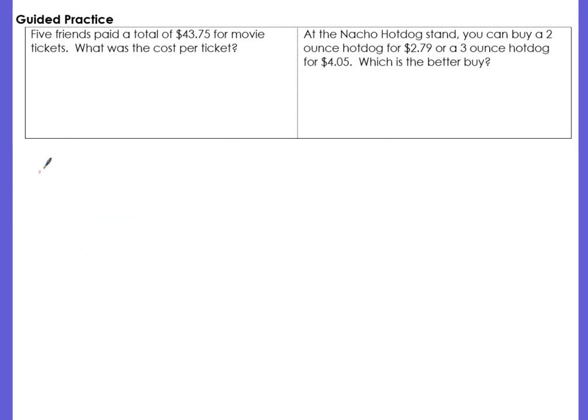Let's do a couple more examples. Five friends paid a total of $43.75 for movie tickets. What was the cost per ticket? So we want to find the unit price. Set up your rate. The cost was $43.75 for five friends that each got a ticket. So five tickets. We want to know how much did it cost for one ticket.